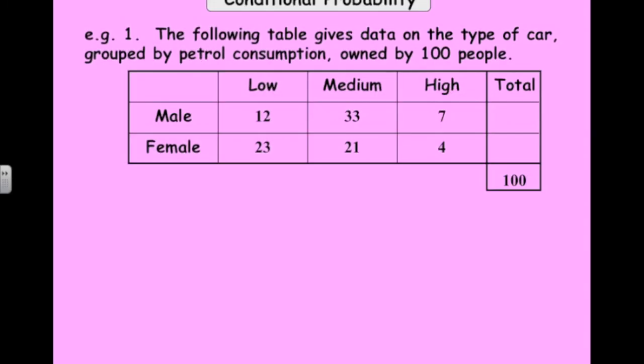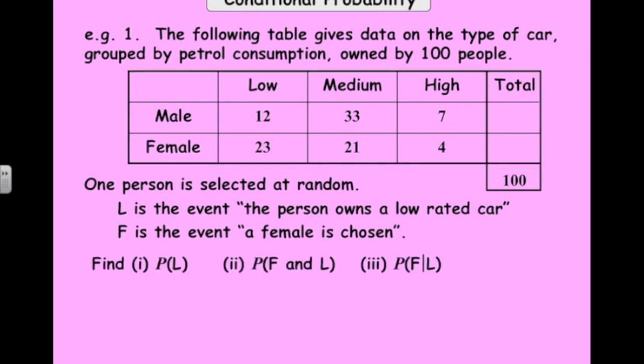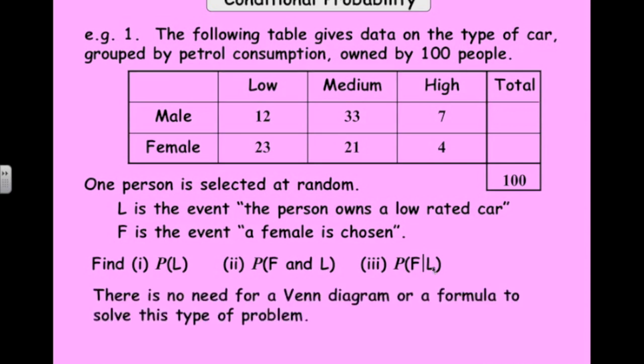Here's a problem that involves conditional probability in a table form. Once again, you may have seen this kind of problem before. So we've got a table that gives type of car, low, medium, high fuel consumption, and whether it's owned by a male or a female. And we've collected some data on these 100 people. So if we select a person at random, we've got two events here. L is the event the person owns a low-rated car, and F is the event that the female is chosen. And we want to work out these three probabilities. The last one is what we're interested in here, the probability that someone's a female, given that they own a low-rated car.